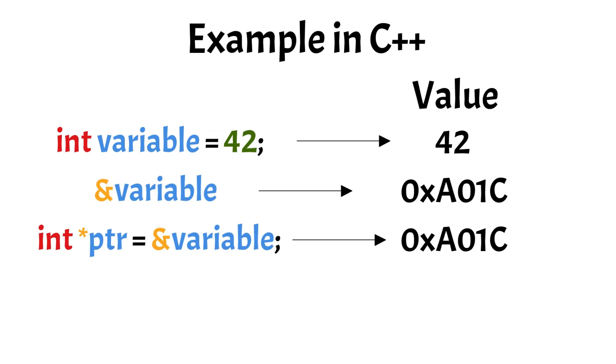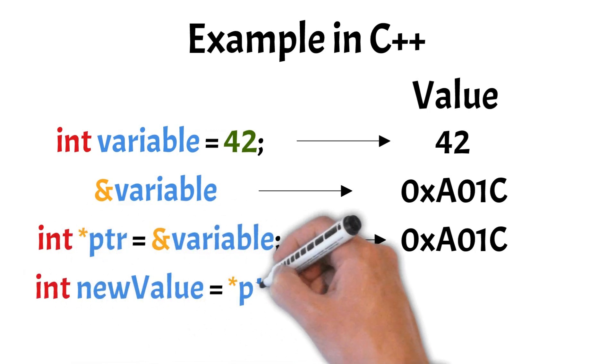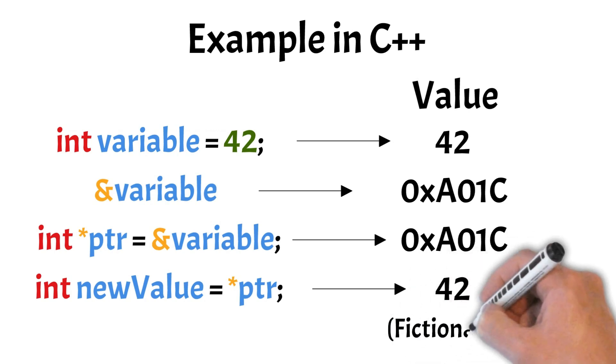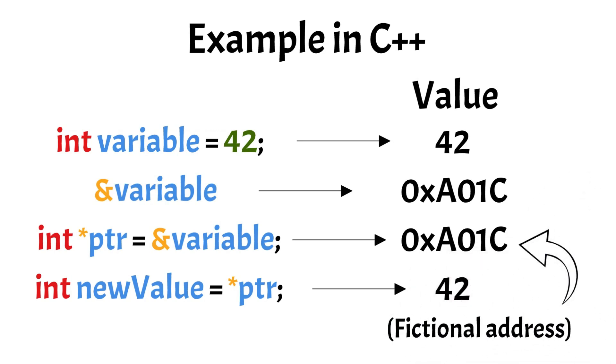If we want to access our original variable through a pointer, we can do so using the following line. This line creates another variable that holds the value stored at the memory address specified by our pointer. At first, this might seem like an unnecessary complication, but in larger and more complex programs with different data structures, using pointers is generally the preferred way.